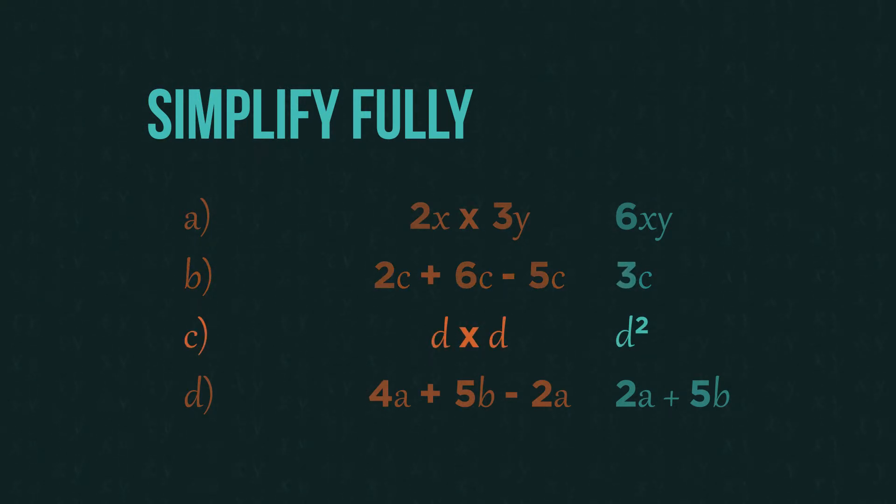Here, we need to get rid of the multiplication sign, which would give us dd. But we can improve on that even further by writing d squared. If the question had been this, then it would be d cubed. Or this would be d to the power of 4.